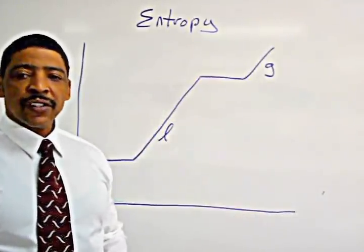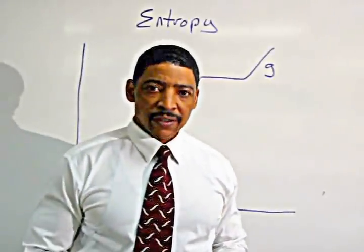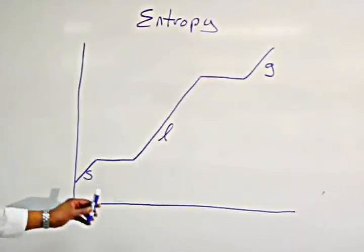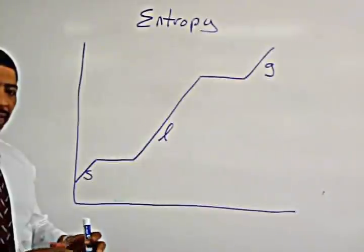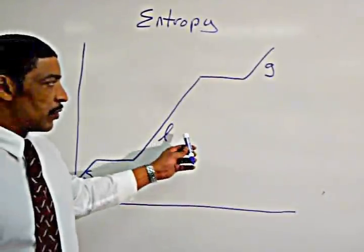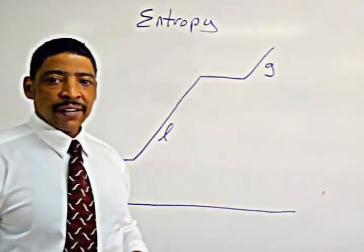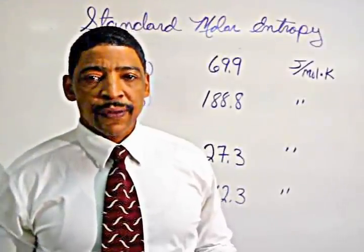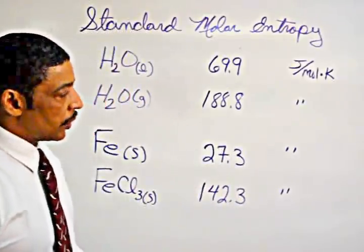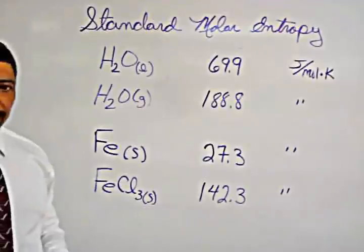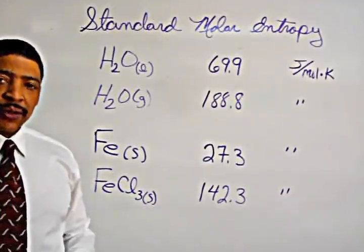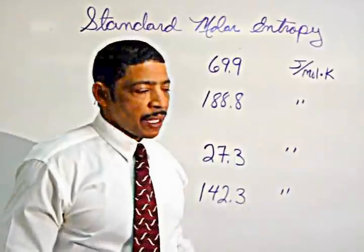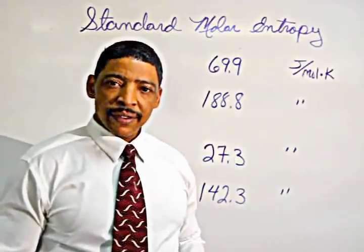The term entropy means randomness or disorder. Clearly, a substance in the solid state is more organized than a substance in the liquid state, which is more organized than a substance in the gaseous state. The entropies for various substances may be found on a table of standard molar entropy. The units for standard molar entropy are joules divided by moles times degrees Kelvin.